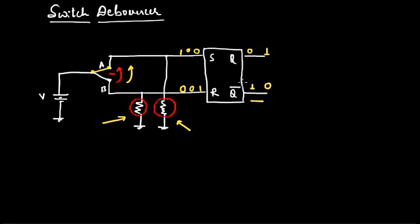Because of contact bounce, the center contact doesn't stay at point A. It again starts coming down. As we have two pull down resistors, again the inputs to S and R is 0 0. That means the current state is maintained. So again there won't be any change at the output.